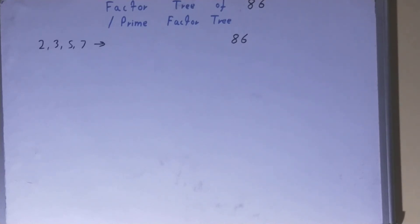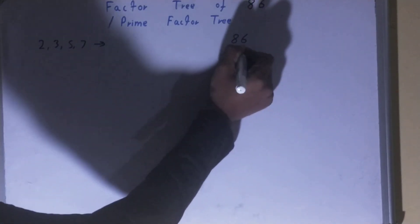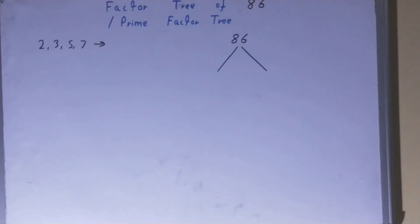that the ending nodes or the terminating nodes of a factor tree are made up of prime numbers like 2, 3, 5, 7, and so on. What we do is we factorize the number into groups of two or sets of two, and there is a rule: one of the numbers should be a prime number.